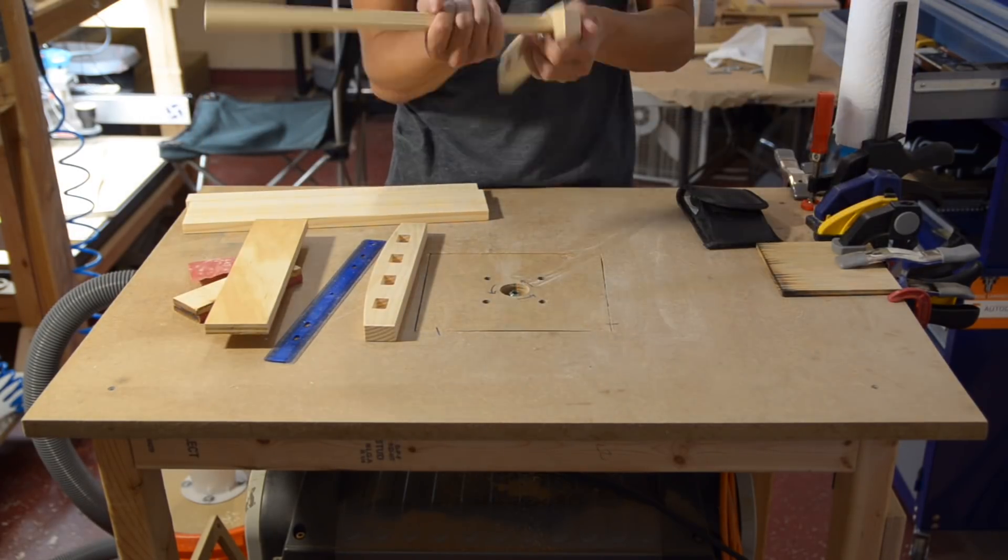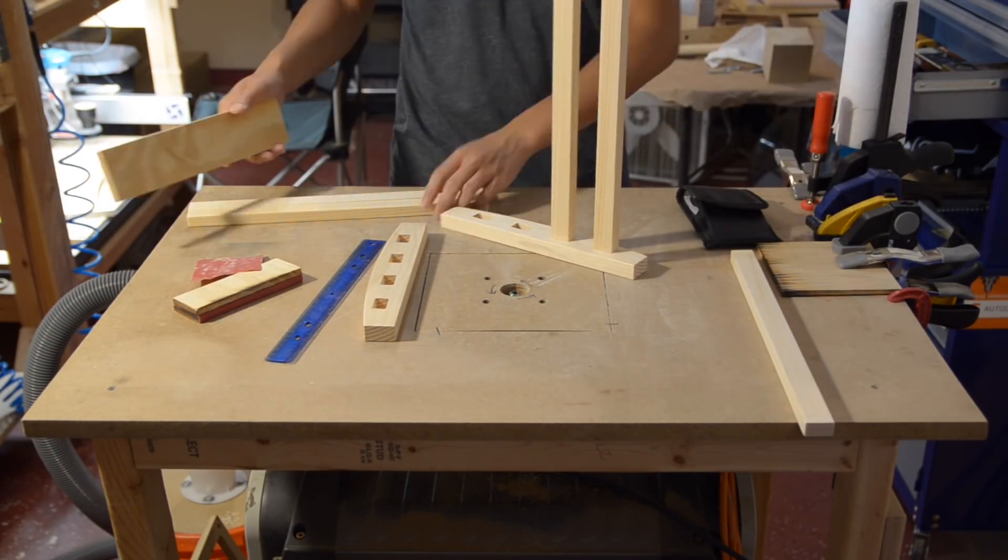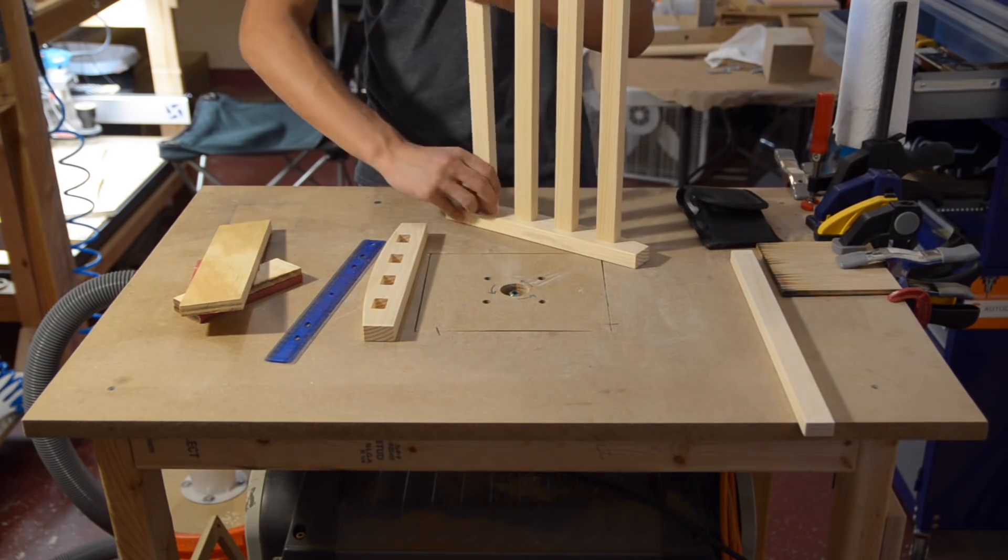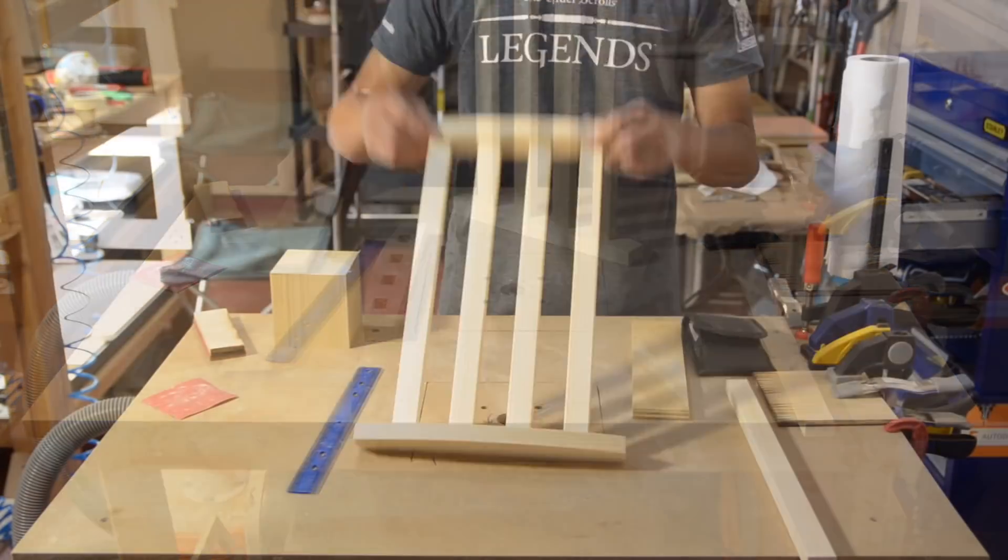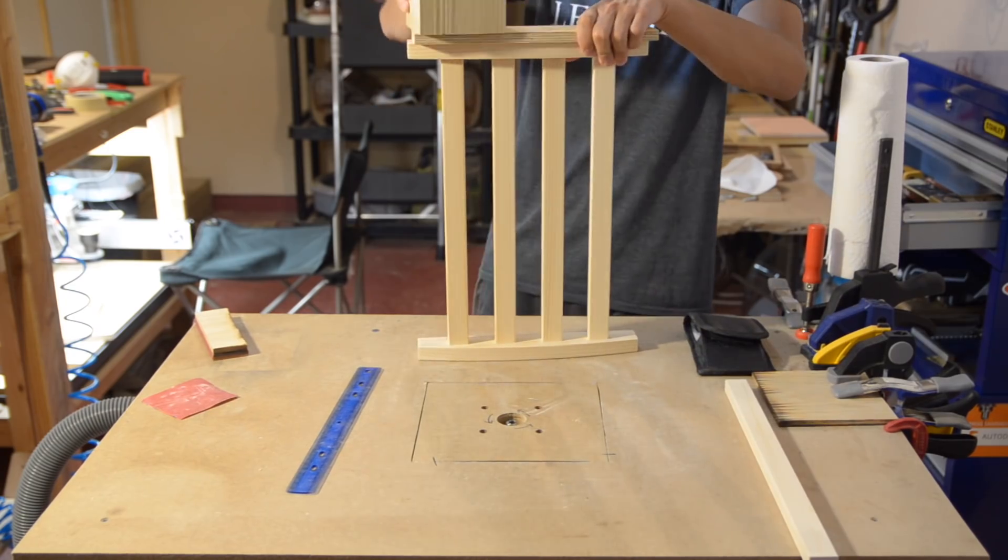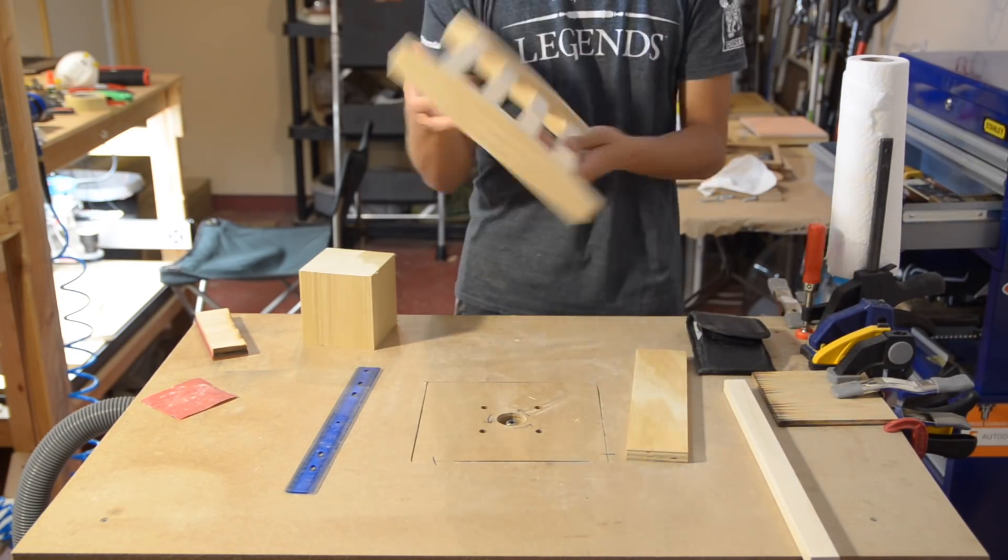Even after sanding, these were still pretty tight, so much so that I didn't bother using glue. That way, I can just break this thing apart and flat pack it when I move. Man, I could really use a wooden mallet right about now. Future CNC project, maybe?